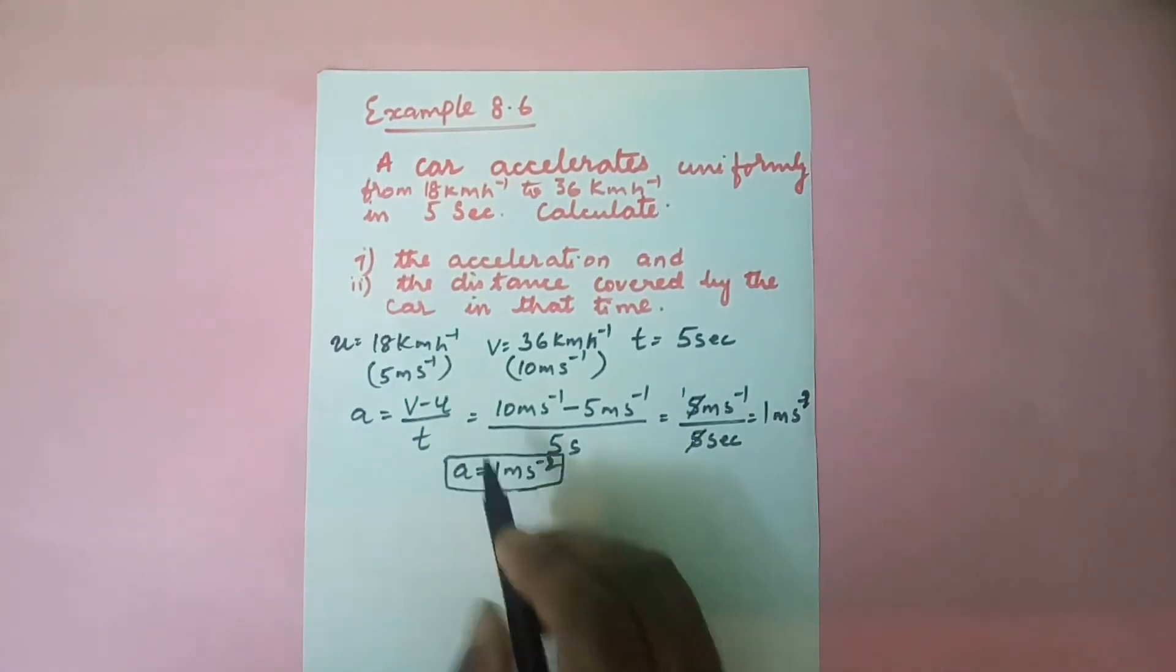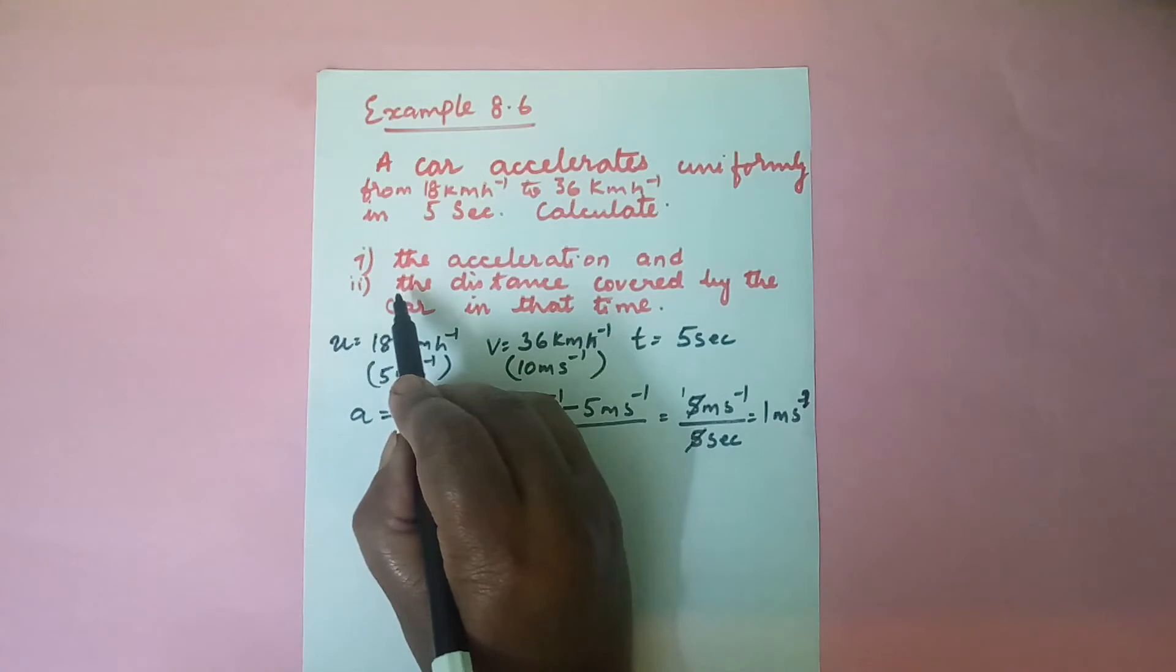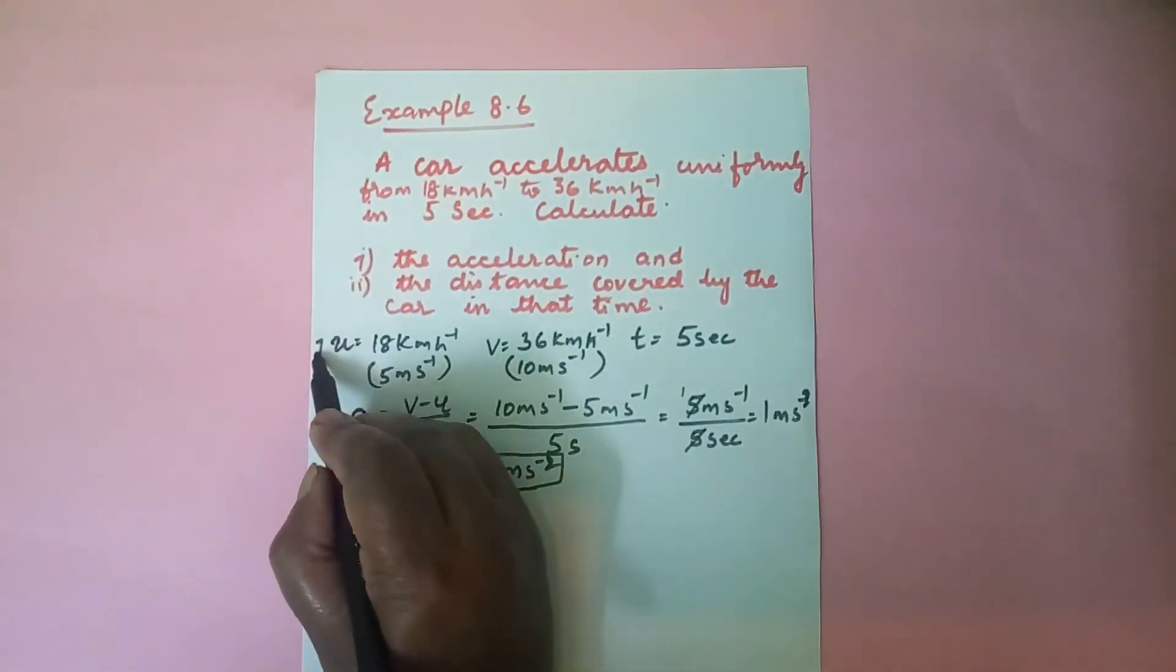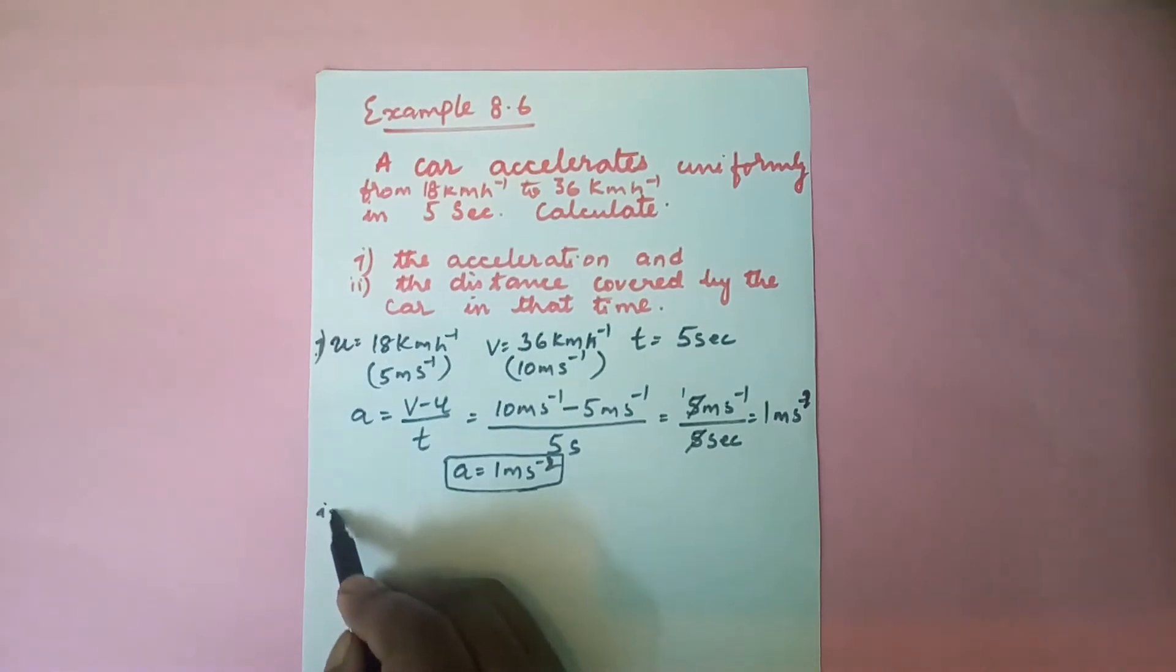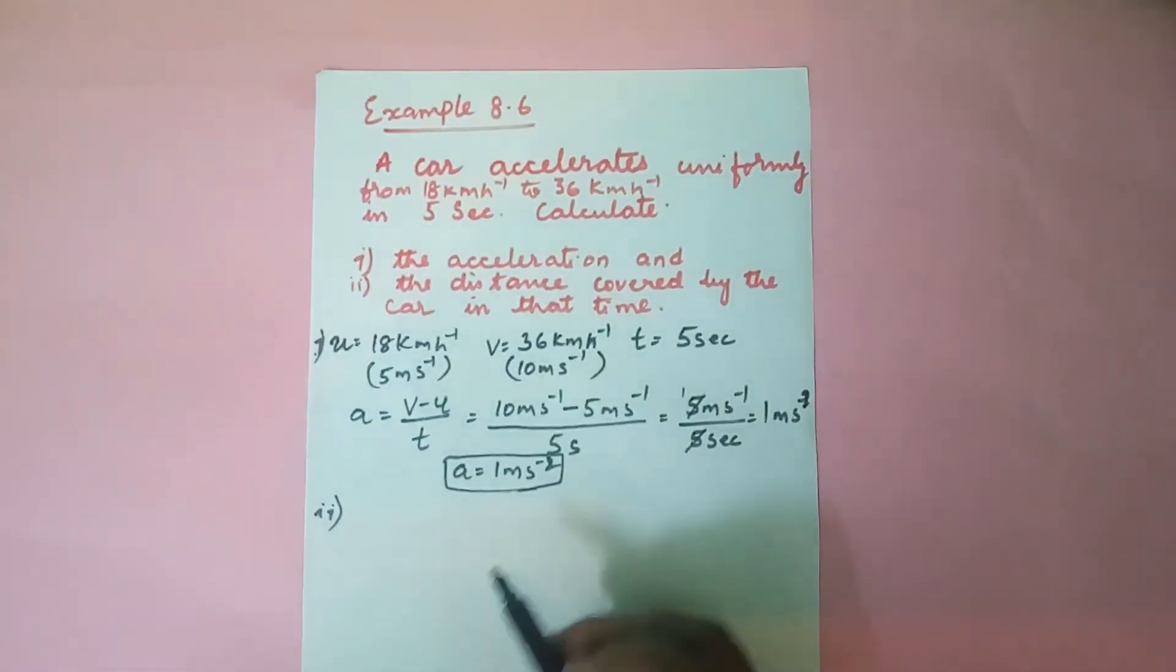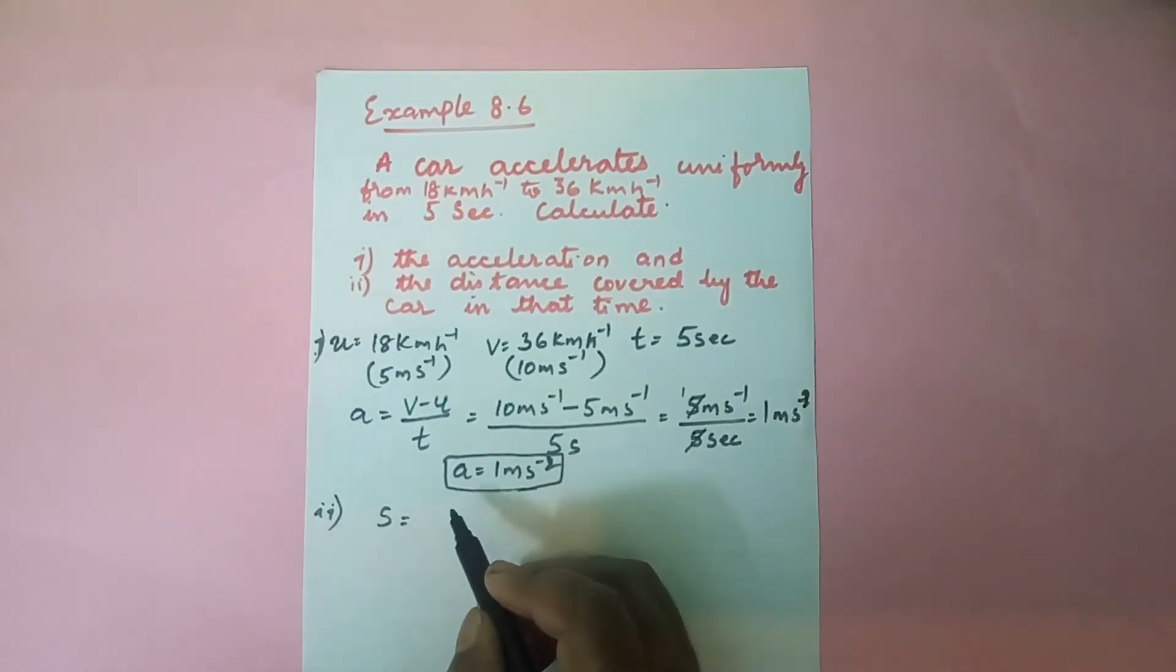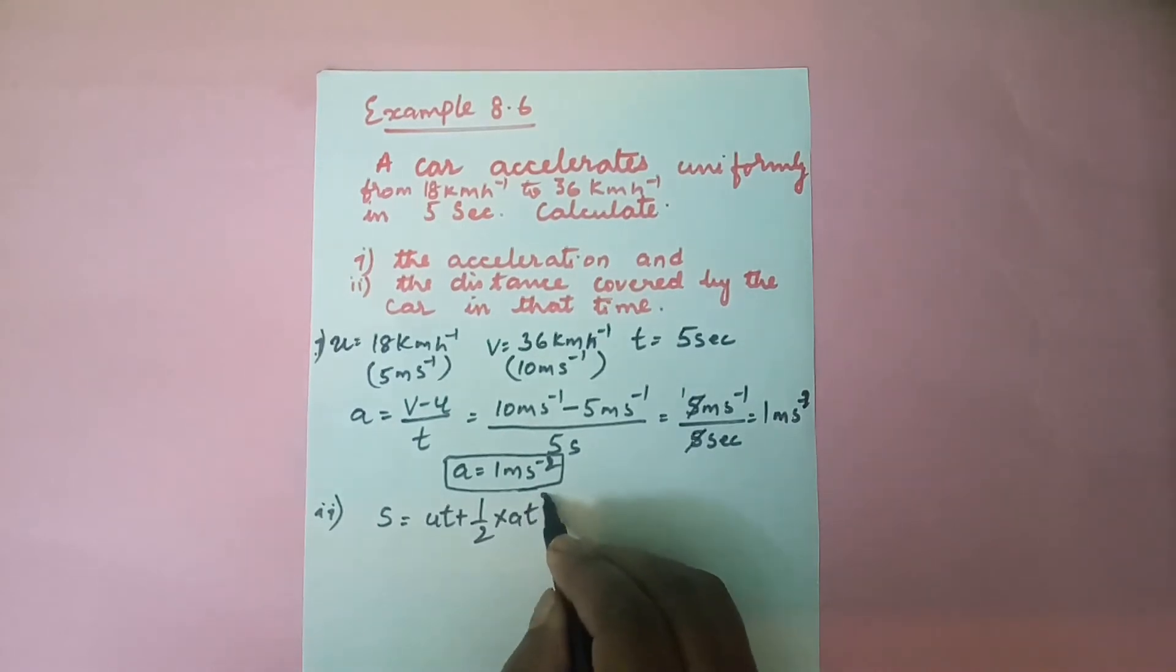Let us keep this value and go to the second question. This is for the first one. Now for the second one, let us find out the distance traveled. Distance traveled is nothing but s. So let us write down the equation: s = ut + (1/2)at².